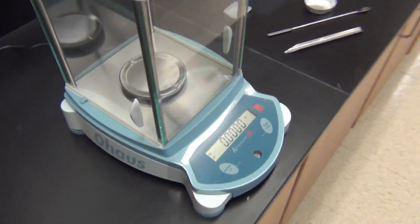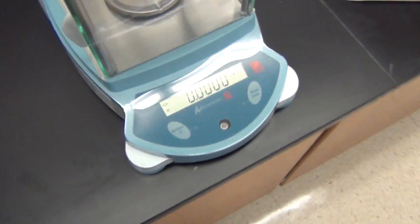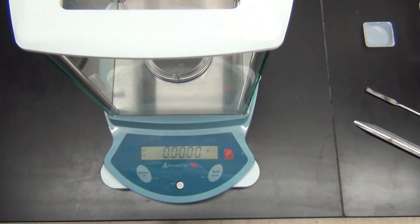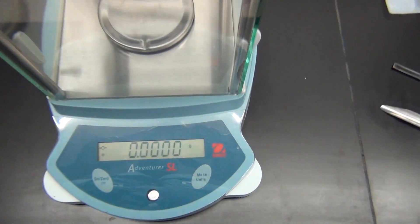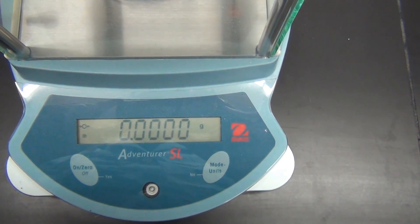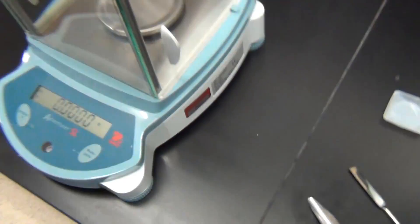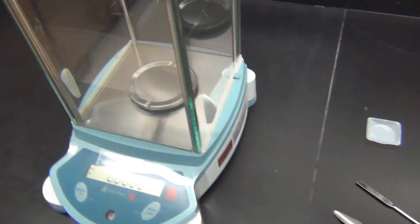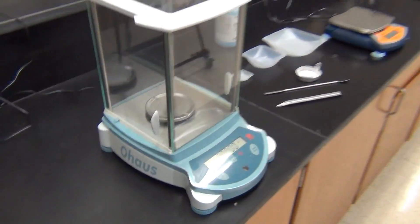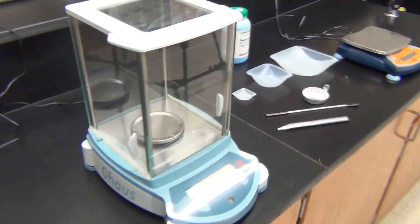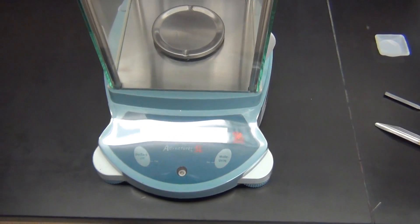The other balance we are going to talk about today is what's called the analytical balance. It will measure weights to the nearest ten thousandth of a gram. It is very accurate, it is very sensitive, and it is very expensive. Its price tag is $2,000.